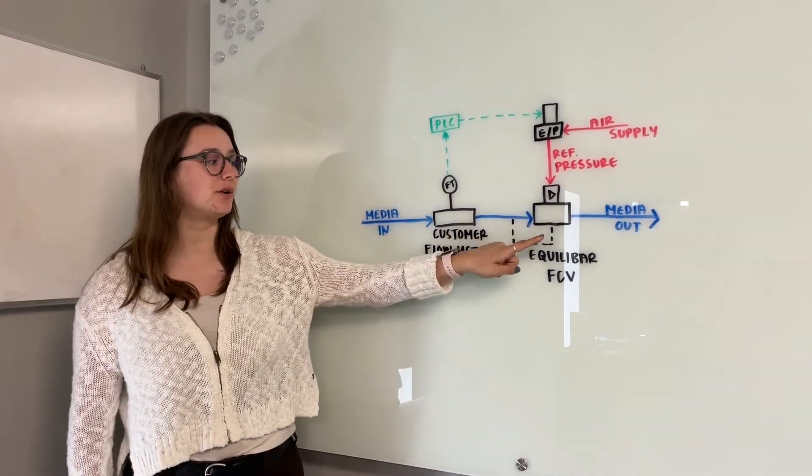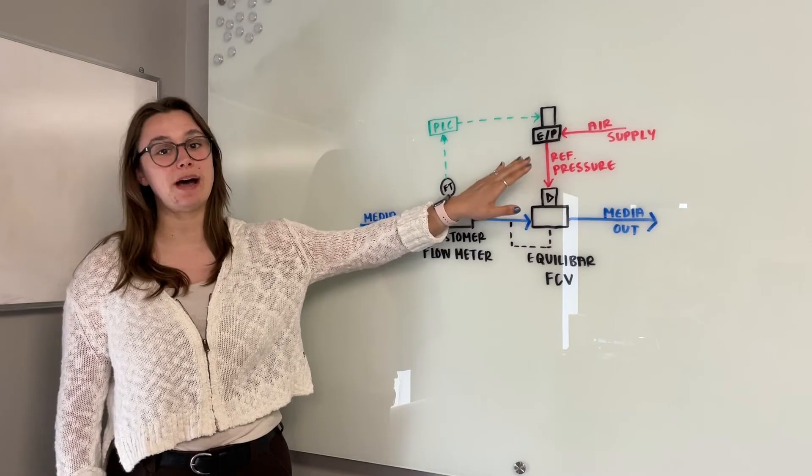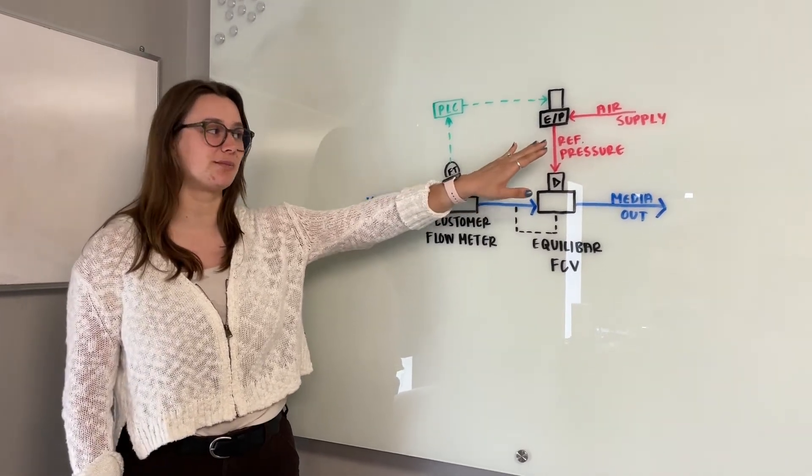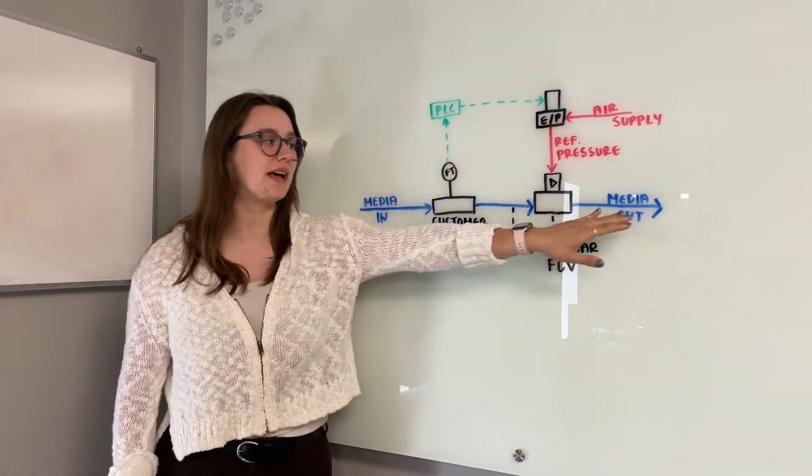The water then goes through our Equilibar flow control valve which is being piloted by a high precision QPV electronic pressure regulator. The water then empties to atmosphere.